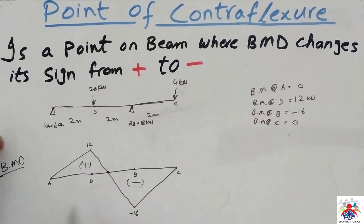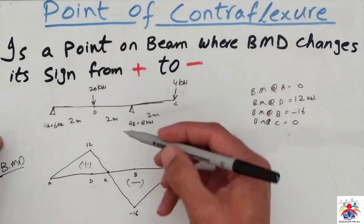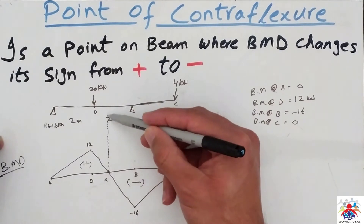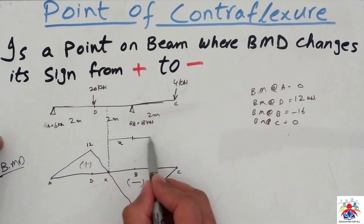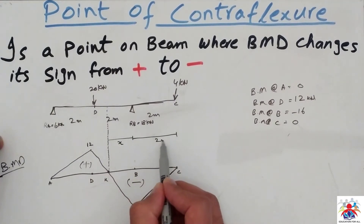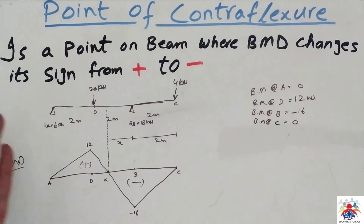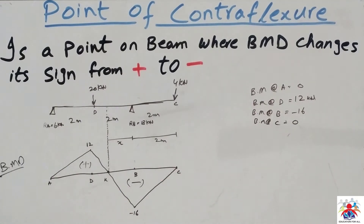There is a point where the bending moment is zero — let's call this point K. Drawing a line down to the baseline, from K to B is distance x, and from B to C is 2 meters. We will calculate the point of contraflexure from the right of the beam, going from C to B and then to K.